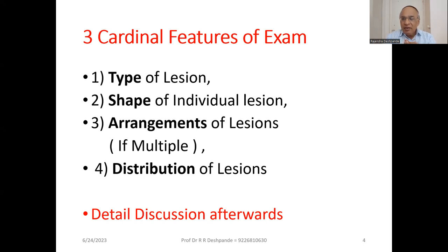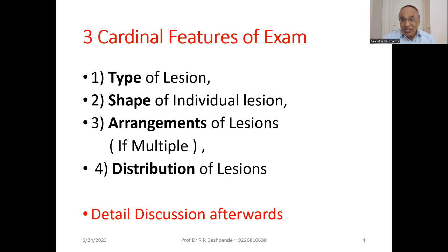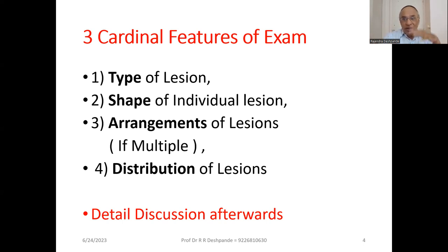Then the cardinal features of examination regarding the skin problem. Number one: type of the lesion. Number two: shape of the individual lesion. Arrangement of the lesions — if there are many or only a single lesion, it is easy to diagnose. Then distribution of the lesion all over the body — where it is more, where it is less. Detailed discussion of all these points will be covered in further slides.